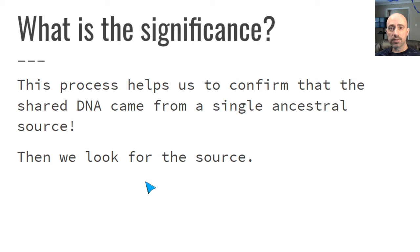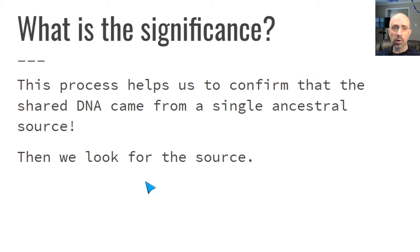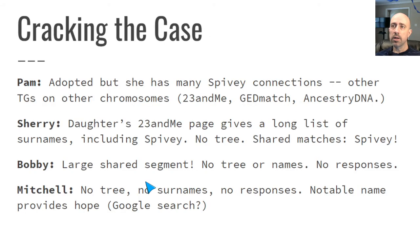The significance of this analysis: we begin to confirm that the shared DNA came from a single ancestral source. In this case, the ancestral source wasn't easy to confirm because so many of these people were not willing to communicate or weren't getting the messages, and some had no idea how they would be related to me. But over time I was able to put some pieces together. For example, Pam was adopted, but she has so many Spivey connections and is a member of so many triangulation groups connected to Spivey ancestry that long before we found out who her father is, we were able to conclude without any doubt that she is a Spivey relative.